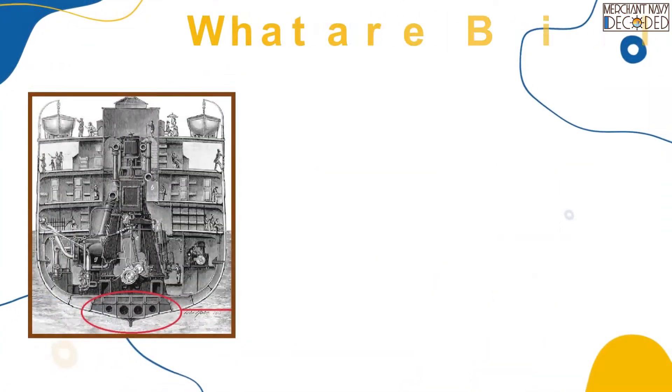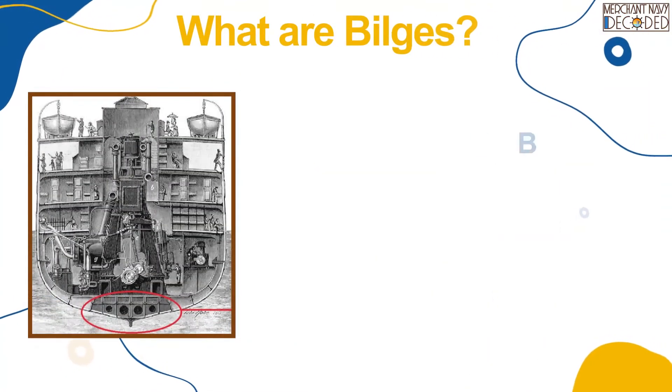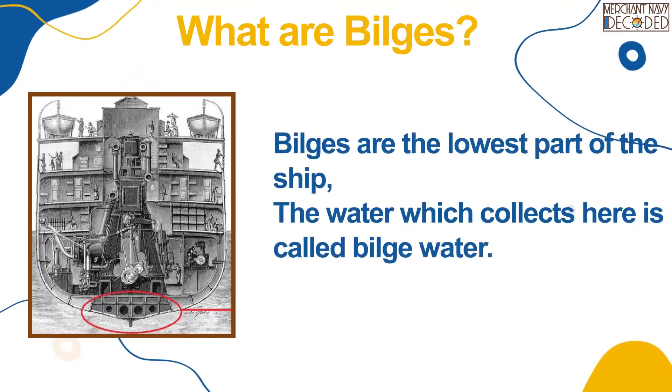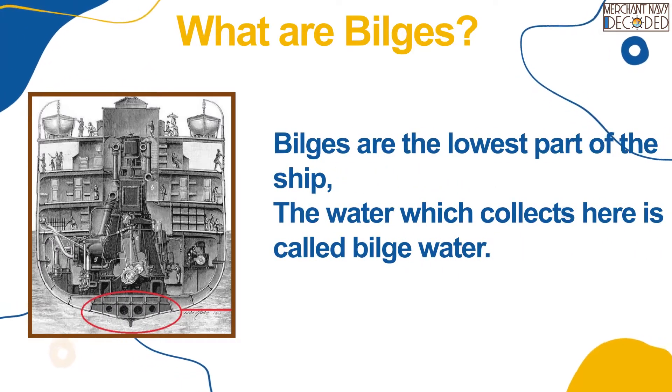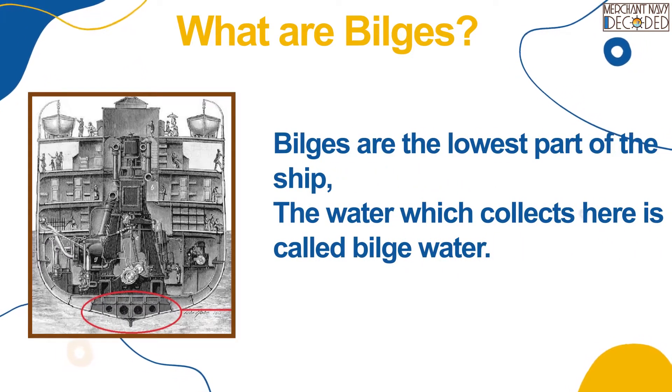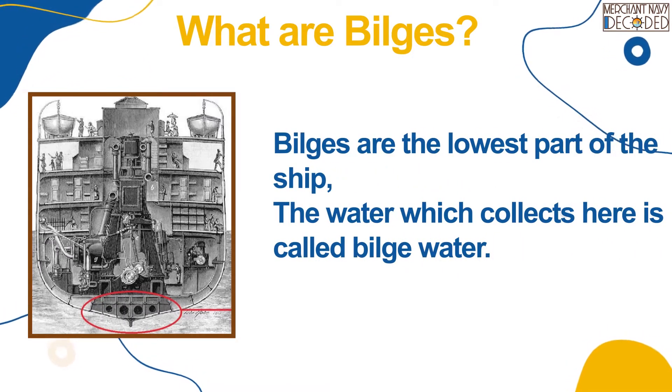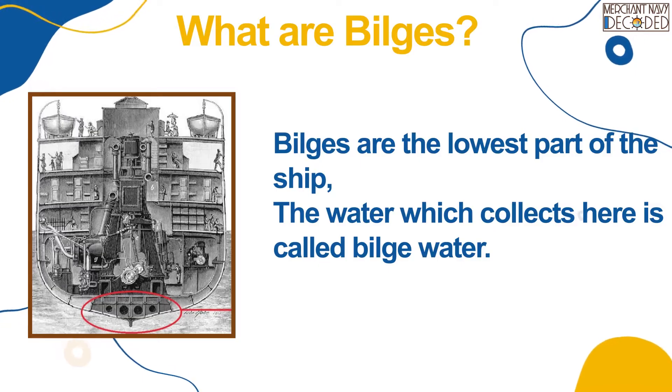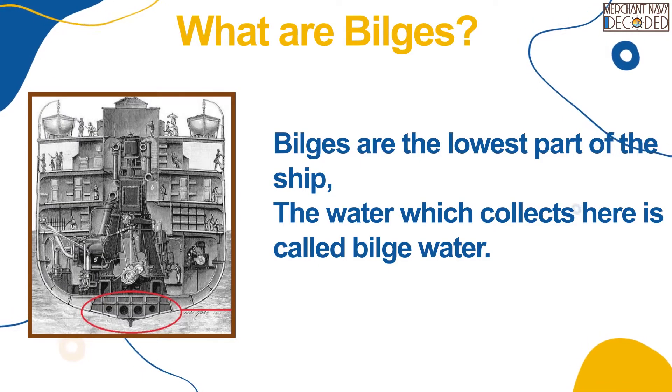What are bilges? Bilges are the lowest part of the ship. The water which collects here is called bilge water. You can see in the diagram with marked bilges.